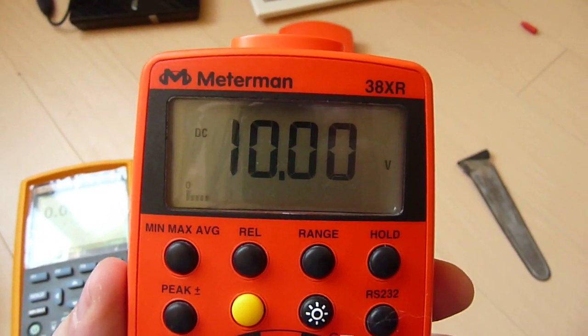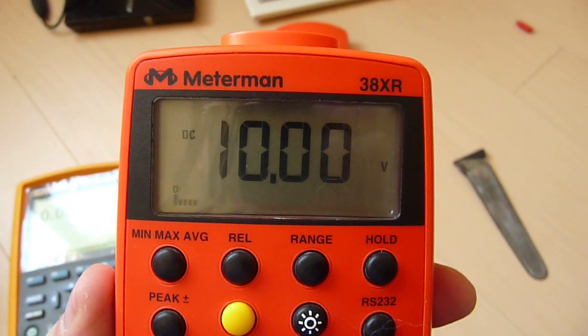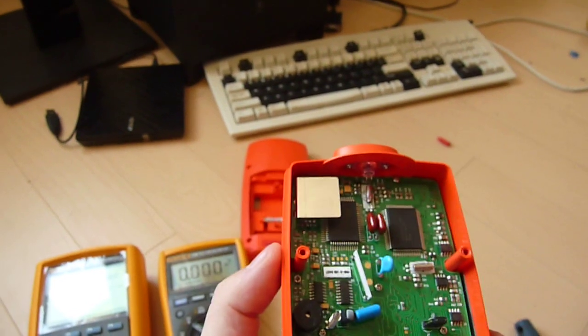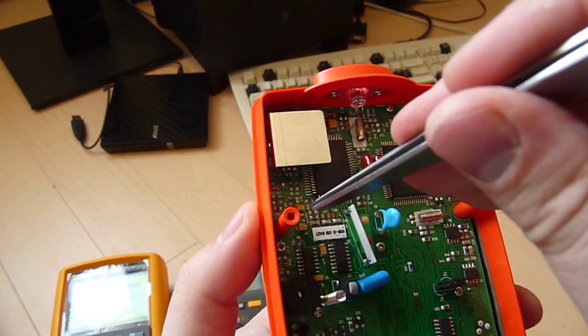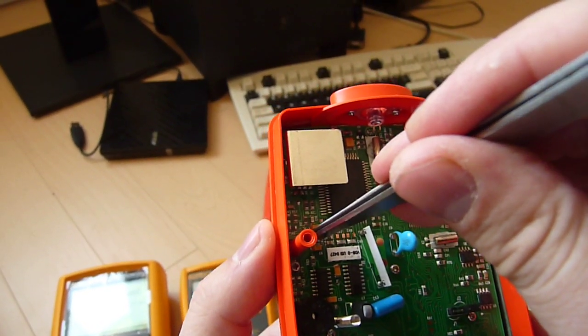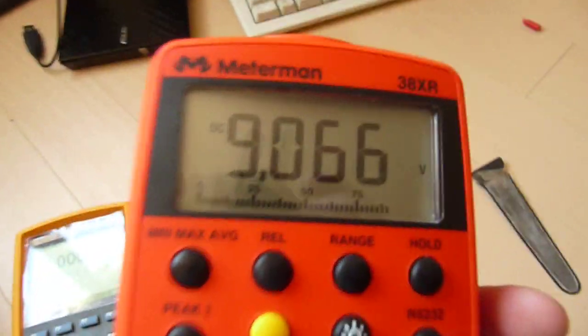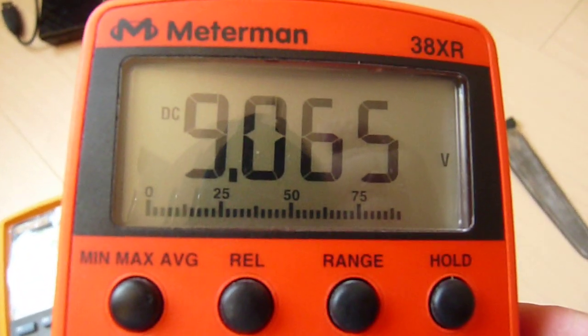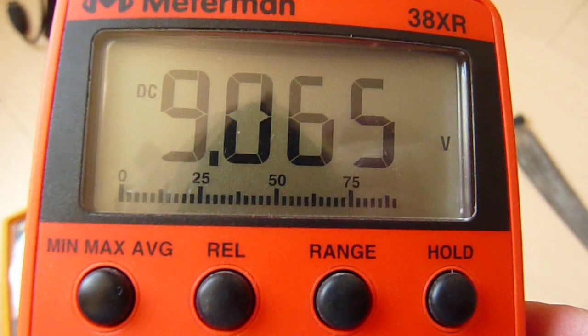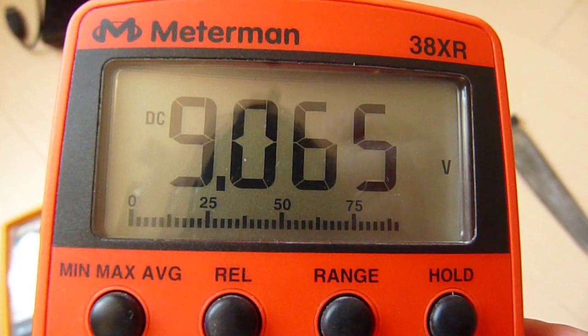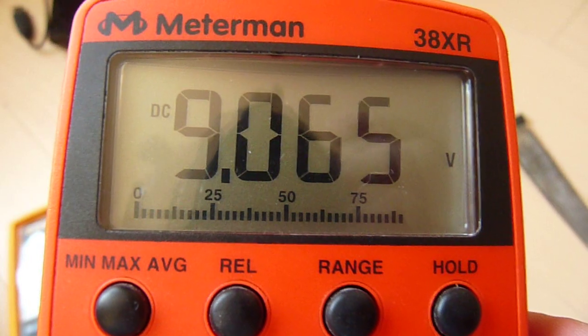And now, let's try to just tap that pot and see what happens. That was about, I'd say, 10 degree turn, and you can see the reading is way off.